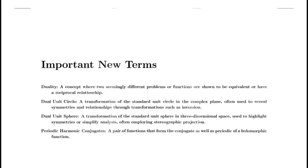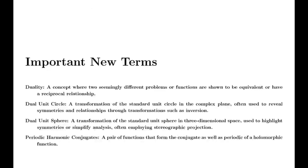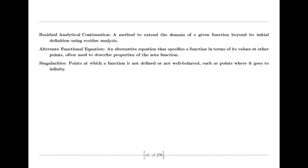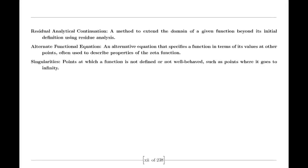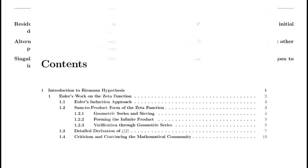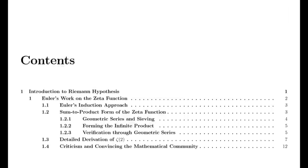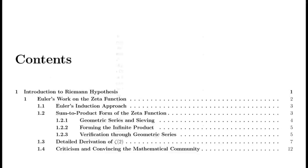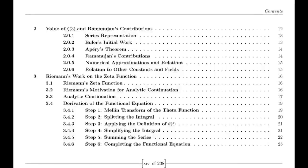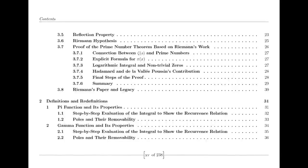Moving to the 19th century, we encounter Bernhard Riemann, who expanded our understanding of complex functions. Riemann introduced the concept of analytic continuation, which allowed for the extension of functions beyond their initial domains. For example, he extended the Riemann zeta function — initially defined only for complex numbers with real parts greater than one — to the entire complex plane except for s = 1, where it has a simple pole. This was a crucial advancement in complex analysis and paved the way for deeper exploration of functions.